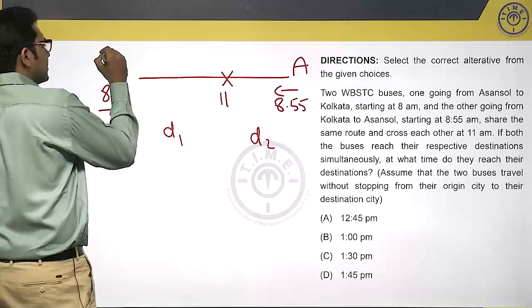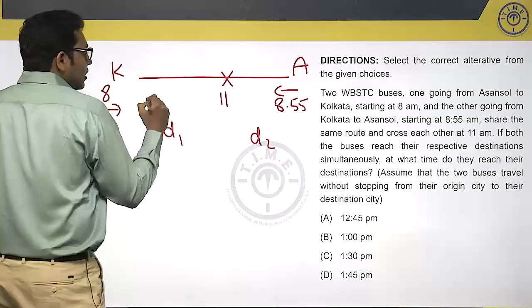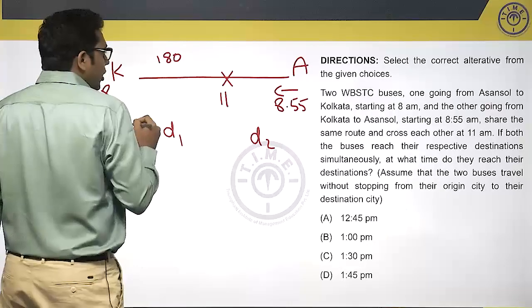Let's say, assume this bus is K and this bus is A. K takes three hours, which is 180 minutes to reach this particular point.